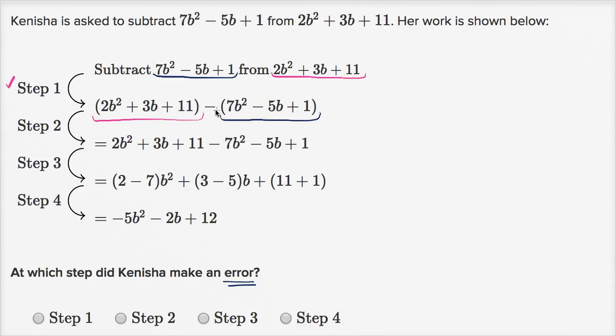Now let's see, step two. It looks like she's going to distribute the negative sign. So the negative of 7b squared is negative 7b squared. We're gonna subtract 7b squared. And then you have the negative of negative 5b. Well that's going to be positive 5b.